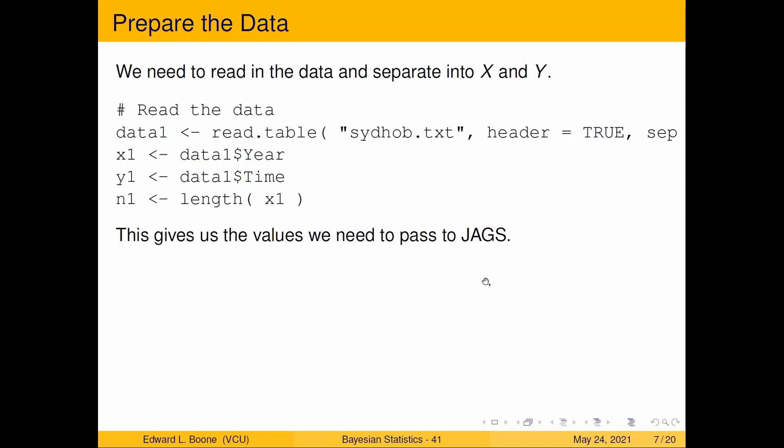The first thing we're going to do is read in the data and separate it into X and Y. So I do read.table. The separator here is a tab. We're going to peel off data one dollar sign year as our x, y one is going to be data one dollar sign time, and n one is the length of it. This is what we're going to need to pass through to JAGS.